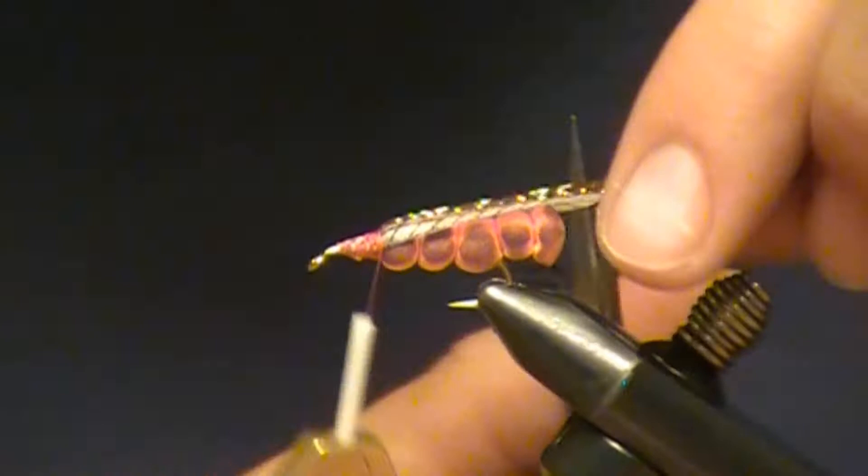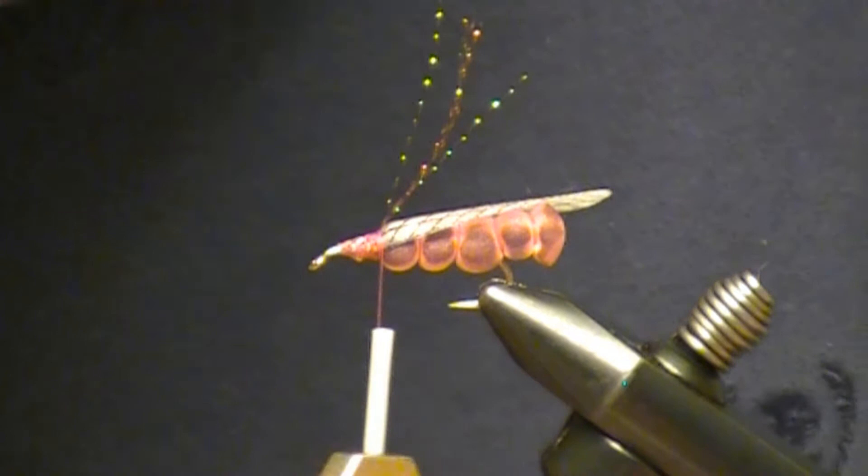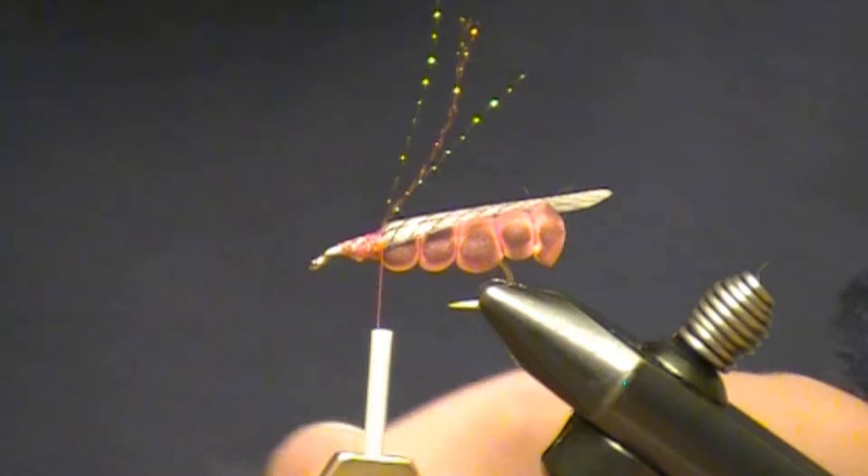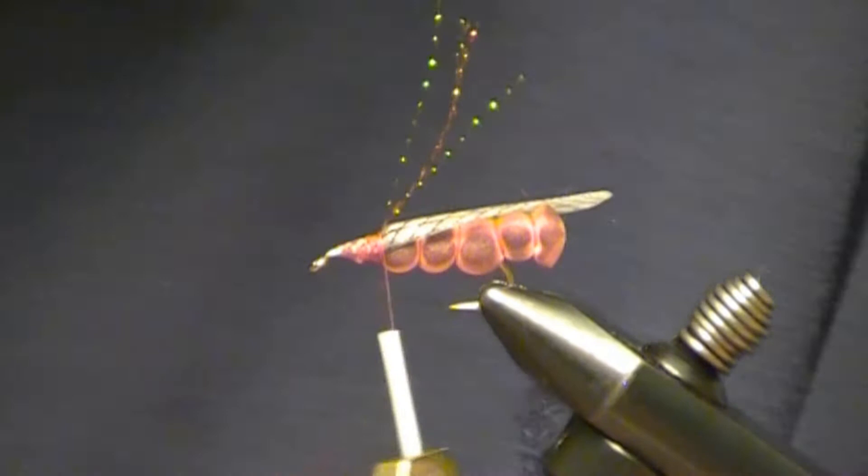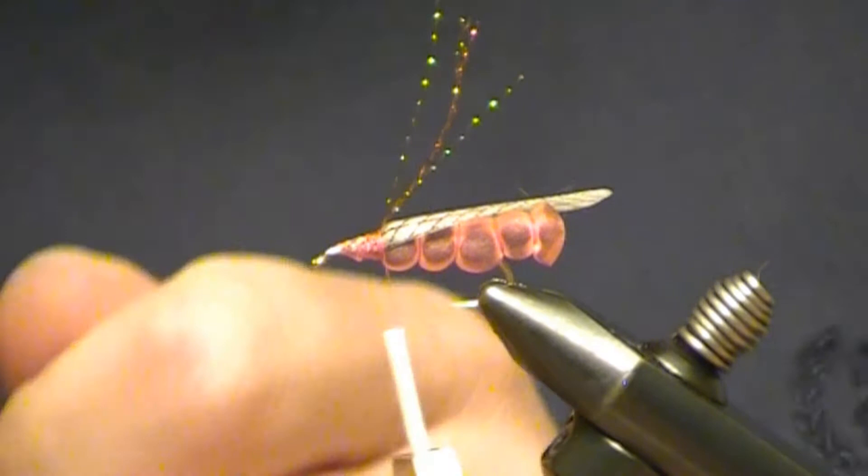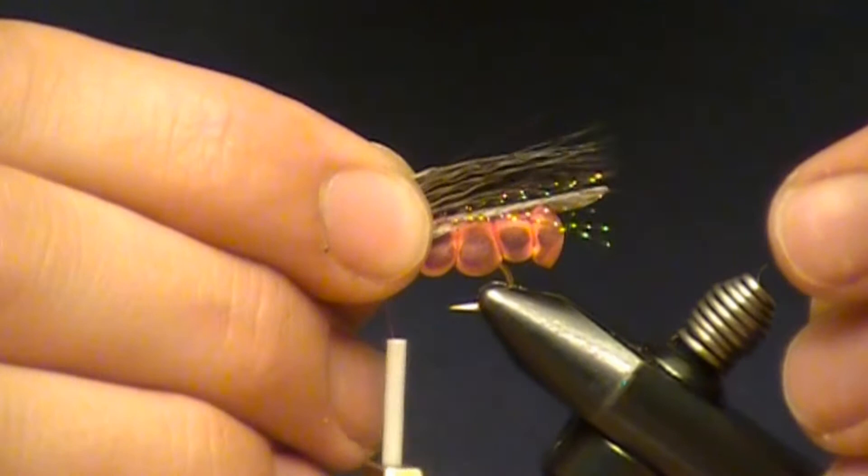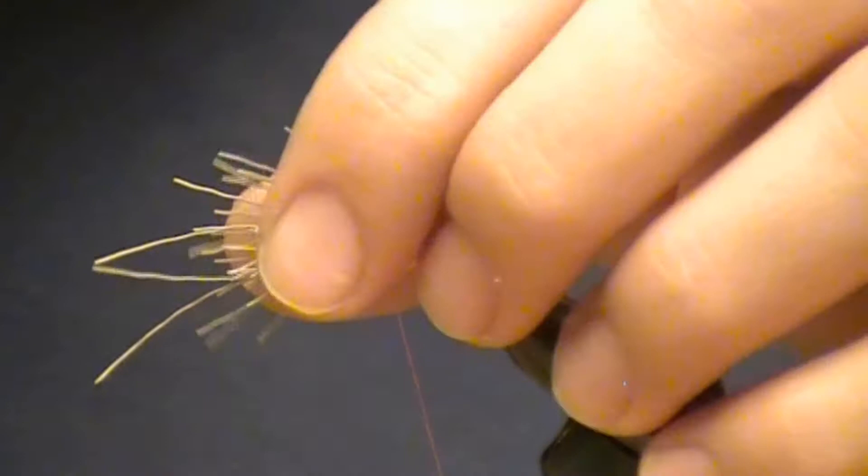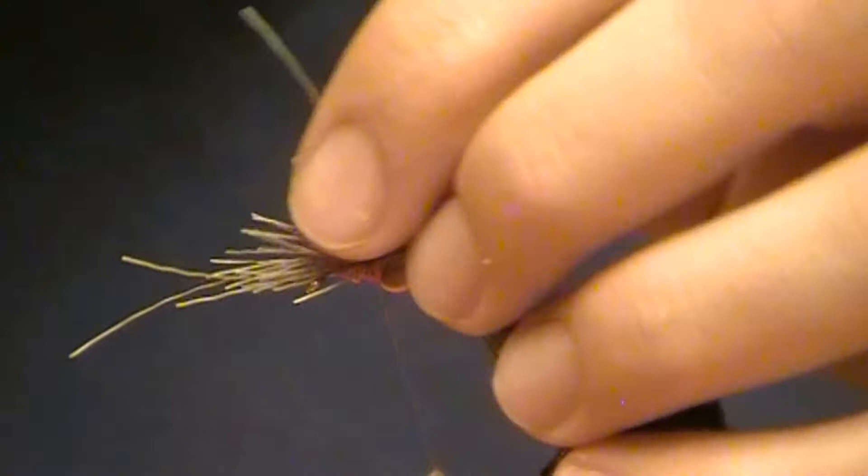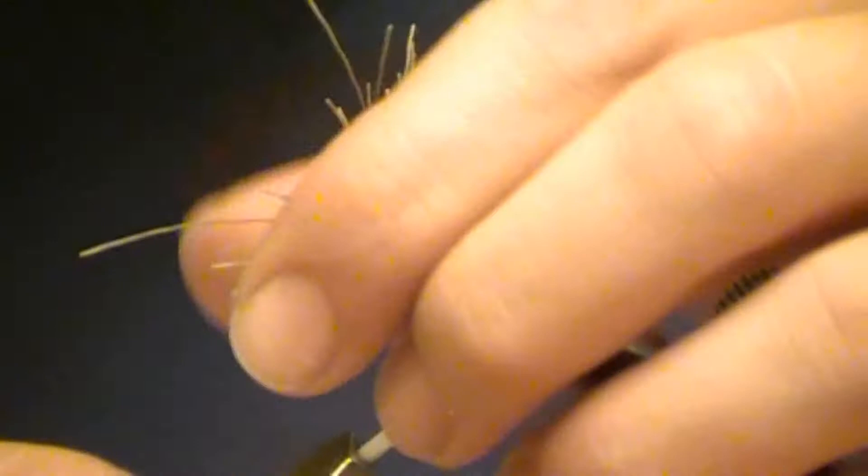And now for my overwing I'm going to use some moose. When you cut off a section you want to make sure you get all that fluff out of there so it's nice and clean. Throw it in the stacker and tie it in even with your wing. Now when I tie in this wing I'm going to make like three or four good wraps, I'm going to pull up some of the butts, make another wrap, keep pulling up these butts, making another wrap. This will ensure that every single one of these hairs gets tied in nice and tight, that way the wing will not slip out on you.